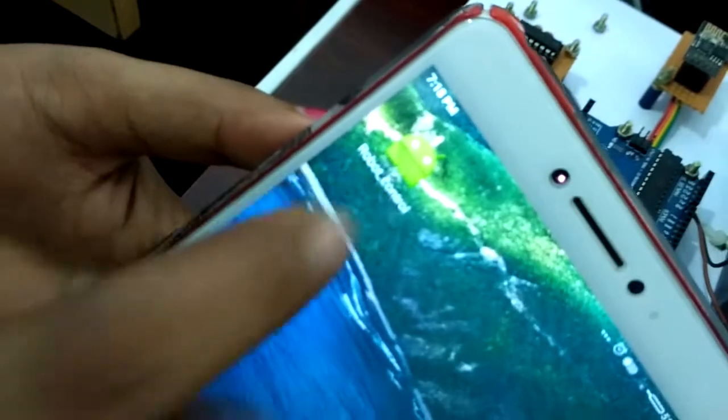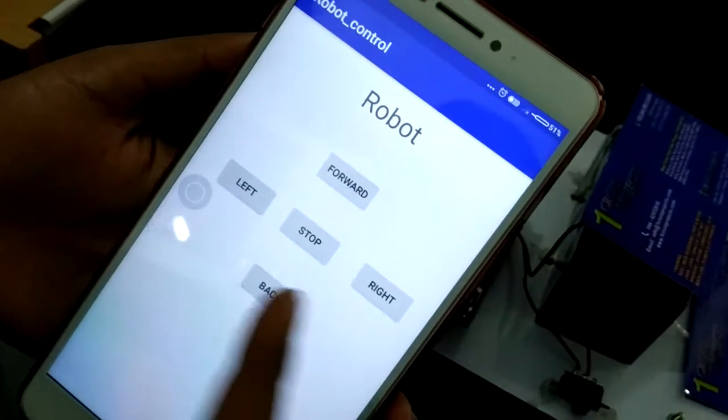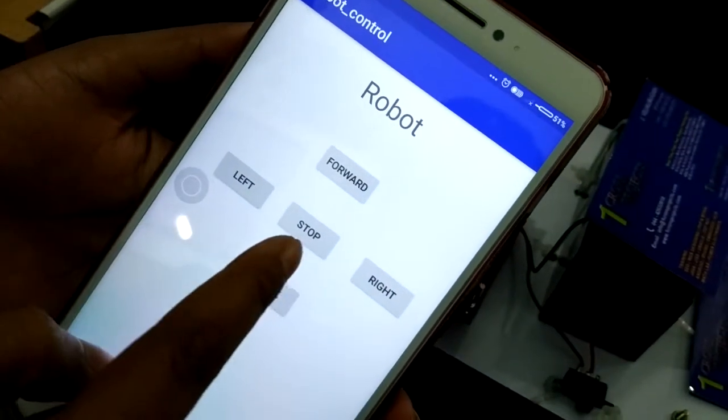So this is the Android app. There are 5 buttons: Forward, Back, Right, Left, and Stop.